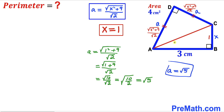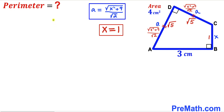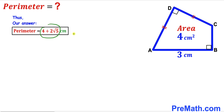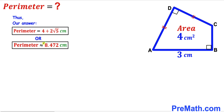In the final step we calculate the perimeter of the quadrilateral by adding all side lengths: 3 + 1 + √5 + √5. Combining like terms gives 4 + 2√5 cm. Therefore, the perimeter of quadrilateral ABCD is 4 + 2√5 cm, which is approximately 8.472 cm. Thanks for watching, and please don't forget to subscribe for more exciting videos.